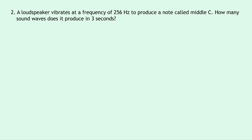Question 2 says a loudspeaker vibrates at a frequency of 256 hertz to produce a note called middle C. How many sound waves does it produce in 3 seconds? Again we need to write down what we know from the question. We're asked to find the number of waves, so N equals question mark. Our frequency is equal to 256 hertz, and our time is equal to 3 seconds.